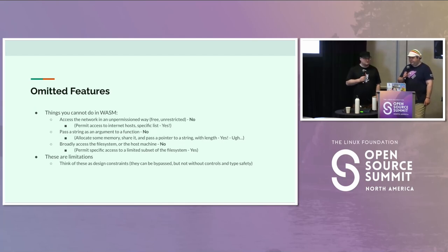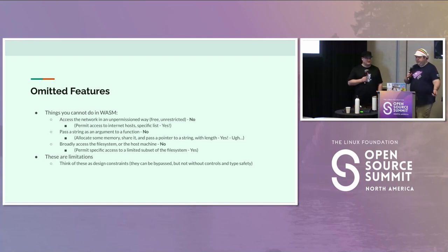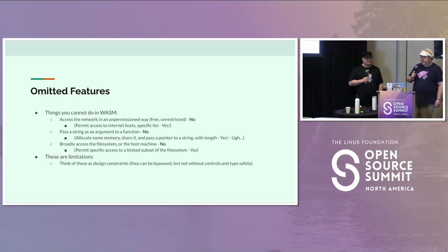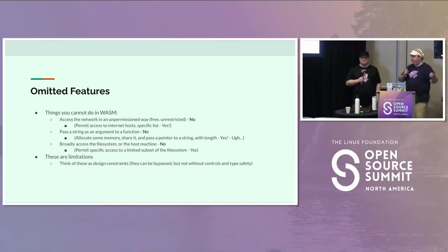Off the bat, what I discovered in my research was there is a list of things you cannot do in WebAssembly — I'll call these limitations up front, but I'll call them design constraints later. You cannot access the network in an unpermissioned way. You cannot pass a string as an argument to a function easily. You cannot access the file system unless permitted. And there's no string type — you have to manage memory and count how many bytes you pass.